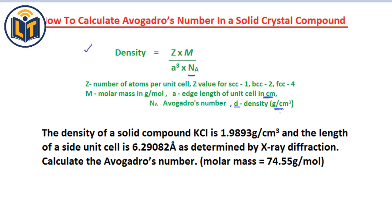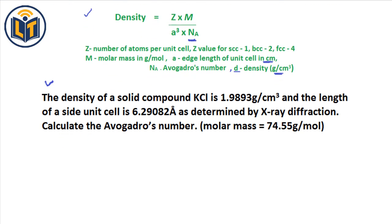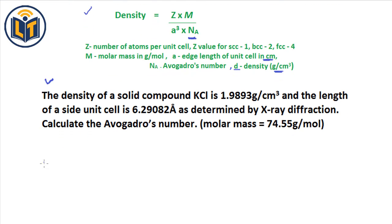Density d is measured in grams per centimeter cubed. Now here is the problem: the density of the solid compound potassium chloride has an FCC structure. From this information, we get the z value — for an FCC structure, z equals 4, meaning 4 atoms per unit cell.